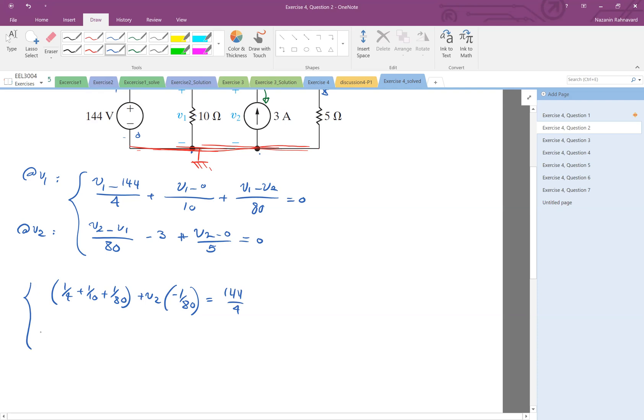Next equation, the second equation: V1 times negative one-tenth, plus V2 times one-tenth plus one-fifth equals 3.